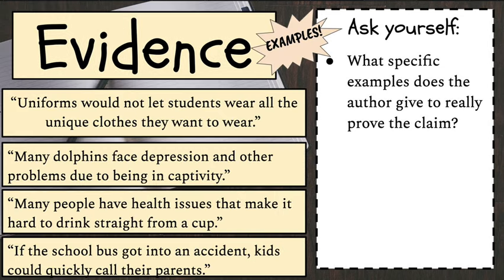Here's some evidence for each of those examples: Uniforms would not let students wear all the unique clothes they want to wear. Many dolphins face depression and other problems due to being in captivity. Many people have health issues that make it hard to drink straight from a cup. And if the school bus got into an accident, kids could quickly call their parents.